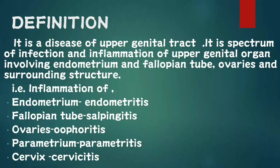Definition: PID is a disease of the upper genital tract. It is a spectrum of infection and inflammation of upper genital organs involving the endometrium, fallopian tube, ovaries, and surrounding structures. Specifically, inflammation of the endometrium is endometritis, of the fallopian tube is salpingitis, of the ovaries is oophoritis, of the parametrium is parametritis, and of the cervix is cervicitis.